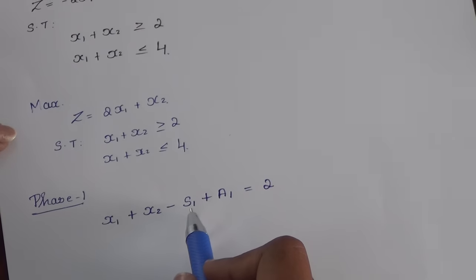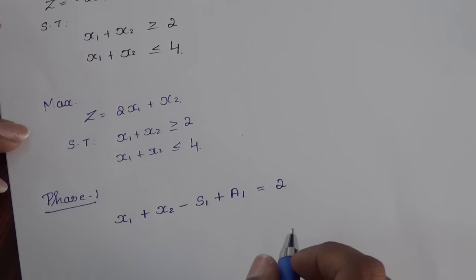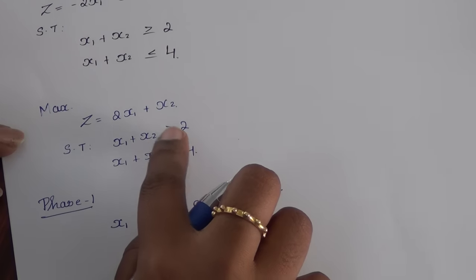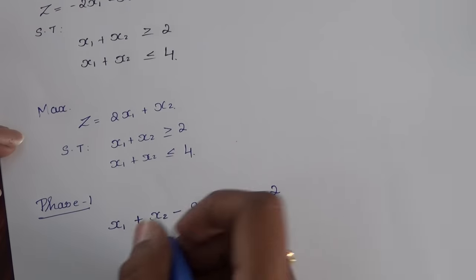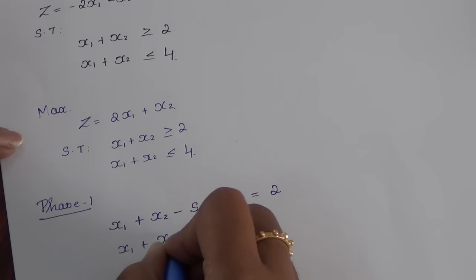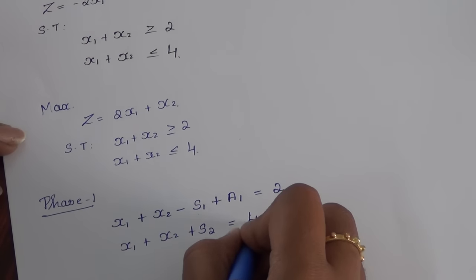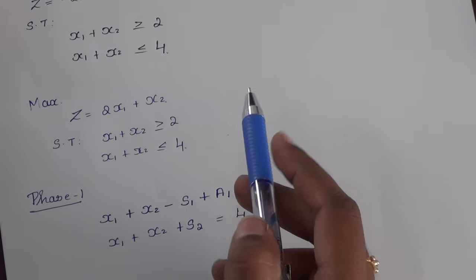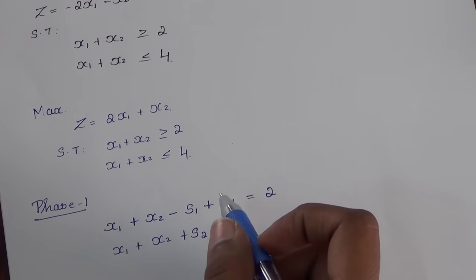For the first constraint, I am introducing the surplus variable and the artificial variable. For the second constraint, since it is a less than or equal to constraint, I am adding the slack variable, represented by plus s2, which equals 4. Since it uses an artificial variable, this two-phase method is also known as the artificial variable or penalty method.